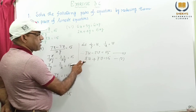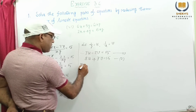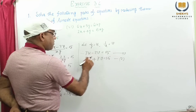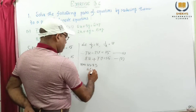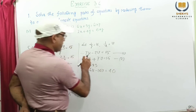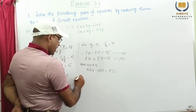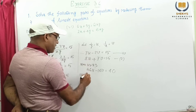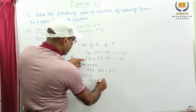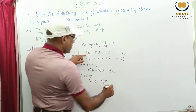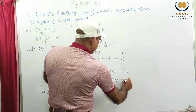So equation number 1 multiplying by 8, and equation number 2 multiplying by 7. Equation number 1 multiplying by 8, then this will be 56u minus 16v equal to 40. This 7 into 8 is 56, this is 16, this is 40. And equation number 2 multiplying by 7, this implies 56u plus 49v equal to 105. This is number 3, this is number 4.